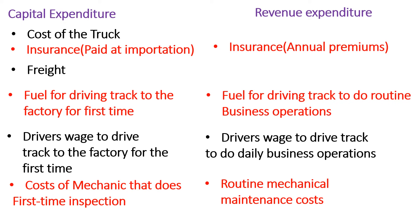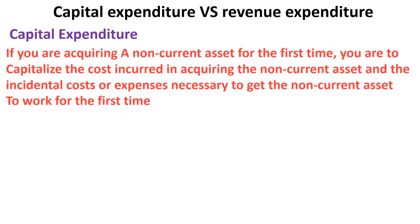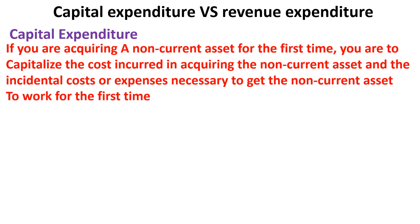The taxes I talked about — especially taxes that cannot be claimed back — are also tagged to the overall cost of the truck. In a nutshell, capital costs are incurred in acquiring a fixed asset for the first time, and any incidental expenses necessary to get the fixed asset working for the very first time. That is how the standard describes capital expenditure, and that is the reasoning behind the classifications I've been describing.